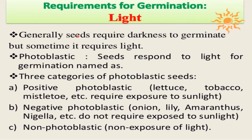Requirements of germination: first is light. Generally seeds require darkness to germinate, but sometimes they require light. If a seed responds to light for germination, it is named photoblastic. There are three categories of photoblastic seeds. Positive photoblastic seeds — for example lettuce and tobacco — require exposure to sunlight. Negative photoblastic seeds — examples are onion, lily, and amaranthus — do not require sunlight. Non-photoblastic seeds require no light exposure.